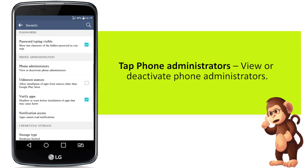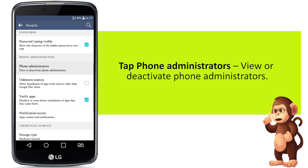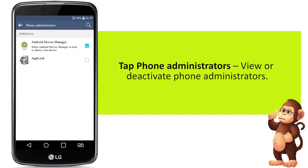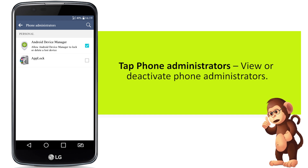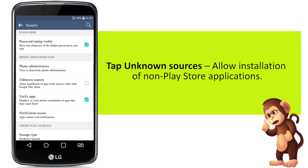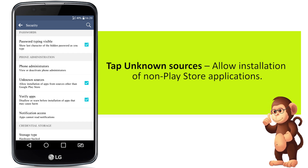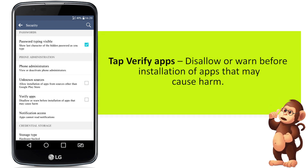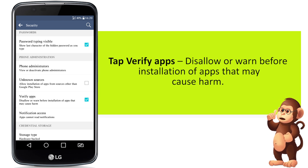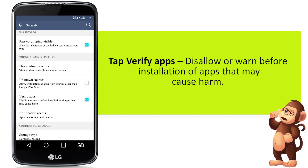Tap Phone Administrators. View or Deactivate Phone Administrators. Tap Unknown Sources. Allow installation of non-Play Store applications. Tap Verify Apps. Disallow or warn before installation of apps that may cause harm.